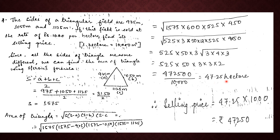The area of the triangular field is 47.25 hectares. We had first found the area in square metres, which came to 4,72,500 square metres, and converting to hectares gave 47.25 hectares. Since the cost of one hectare is 10,000, the selling price of 47.25 hectares will be equal to 47,250.